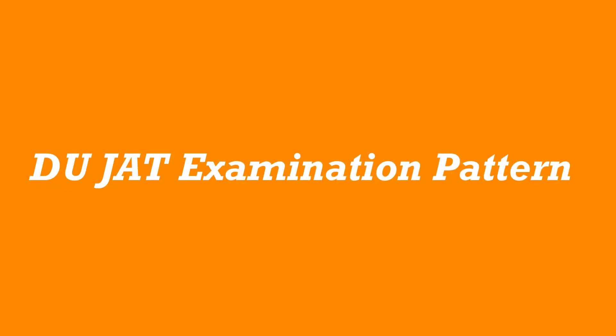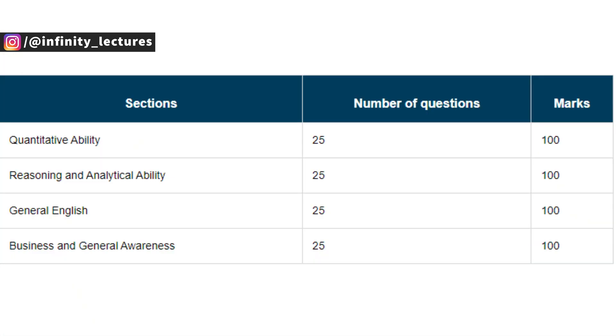Now let's talk about the examination pattern. Your exam will be in online CBT mode with objective type questions. There are a total of 100 questions and the paper is worth 400 marks. You will get 2 hours. You can see there are 4 sections, each with 25 questions and 100 marks. The sections are: quantitative ability, reasoning and analytical ability, general English, and business and general awareness. There is negative marking of 1 mark. The exam is only in the English language.